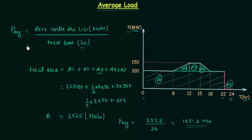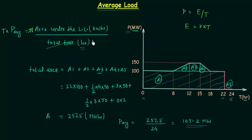There is another important point regarding average power. We know that power equals energy divided by time, or energy equals power multiplied by time. So time multiplied by average power equals the area under the load curve. Since time times power equals energy, the area under the load curve represents the energy. To calculate energy, simply calculate the area under the curve — the unit will be kilowatt hours, or megawatt hours if power is in megawatts.